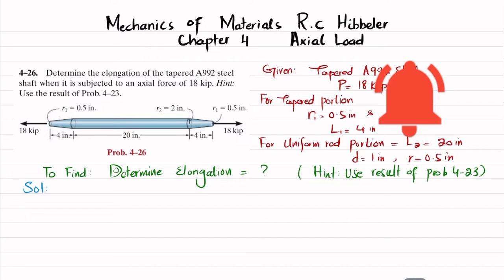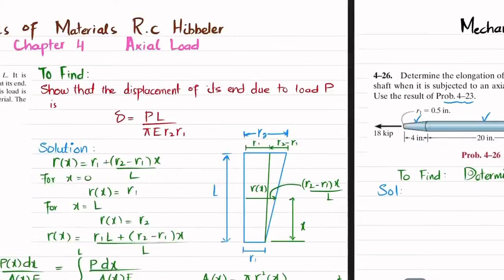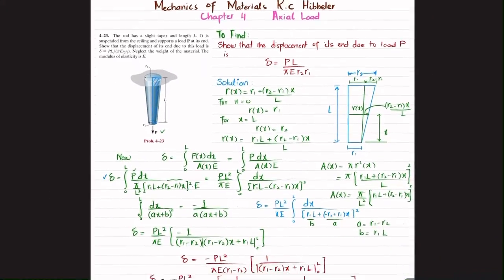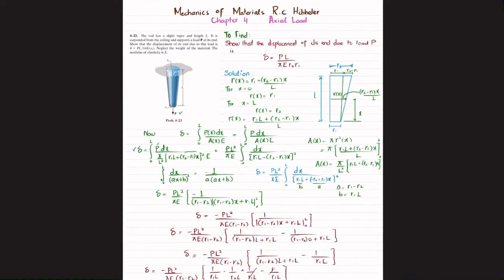Now you can see you have one tapered portion and one uniform rod with a tensile load. From problem 4-23, which we have solved previously, you can see this is the solution. I will attach the link as well.